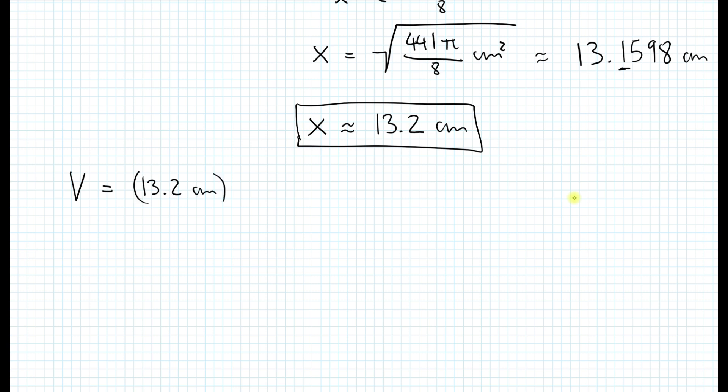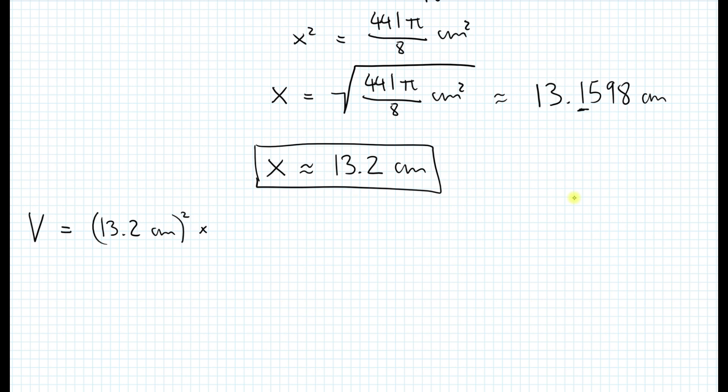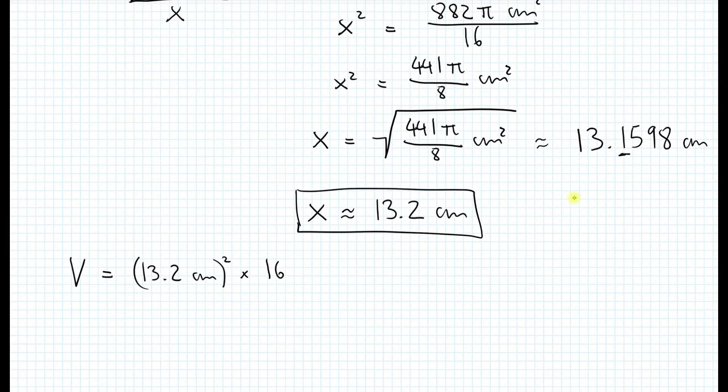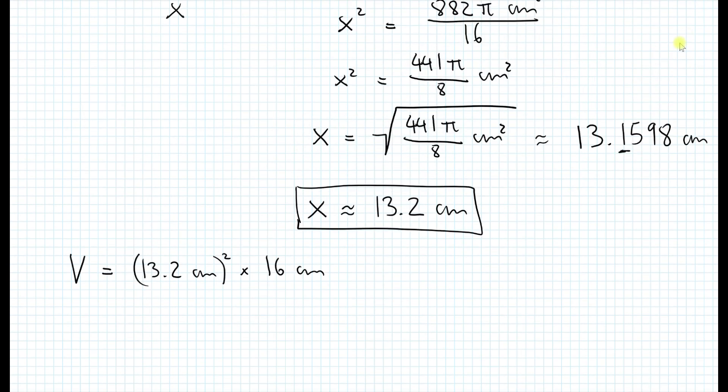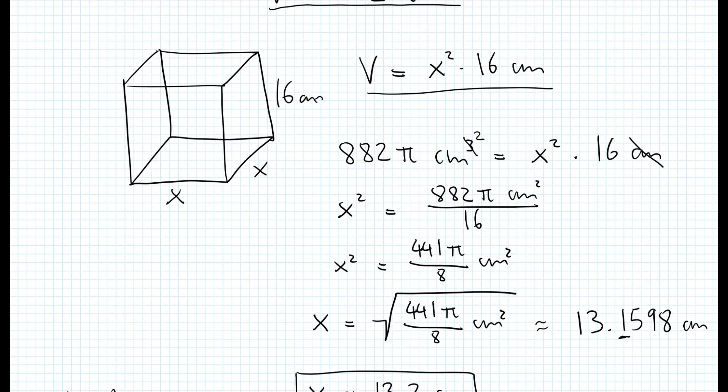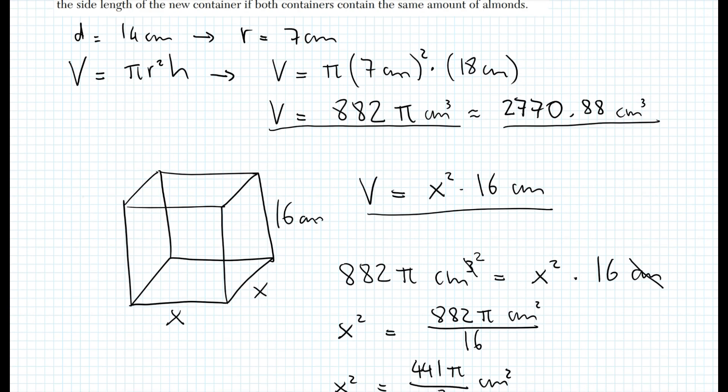So here we have the volume is equal to 13.2 centimeters. We are going to square that because that represents the side of the square base and then we're going to multiply that by the height of 16 centimeters. So let's see what we get here for the volume. So here we get about 2787.84 cubic centimeters. I'm going to call this the check. Let's see. Does this answer here make sense? Well, if you go back here, we did calculate the volume of the cylinder, which is 2770.